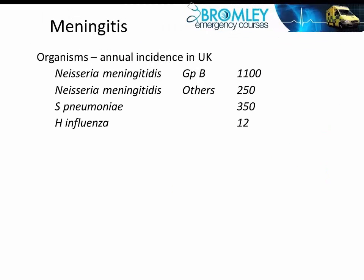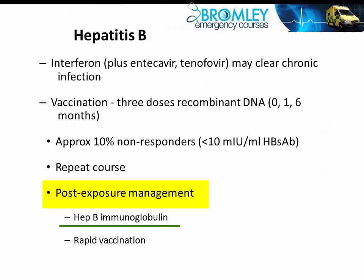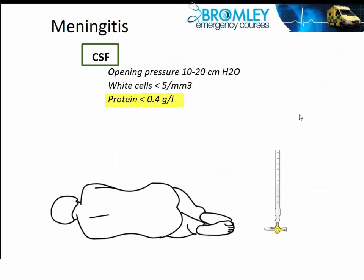That's a long list of different organisms and the diseases associated with them. In normal CSF, protein should be less than 0.4 grams per liter, and the sugar content should be about two thirds of what it is in the serum.